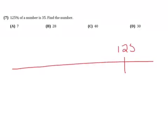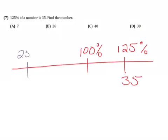125% is 35, and we are looking for 100%. Okay, 125%, when I see that, I think that it divides nicely, and we can figure out what 25%.